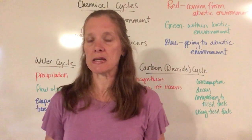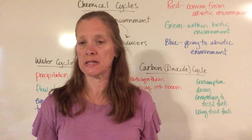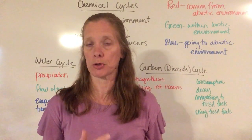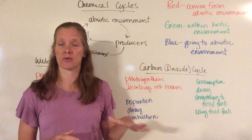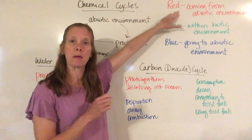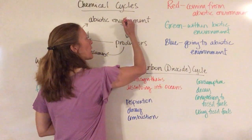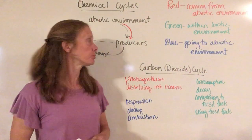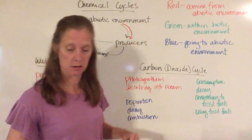To help you keep straight which area is which in each cycle, we're going to use a color coding system, which is why I told you in the instructions that you needed a red, a blue, and a green colored pencil. Anything coded in red is going to be coming out of the abiotic environment — so if it's coming from the abiotic environment and going into the producers, we're going to color code that red.